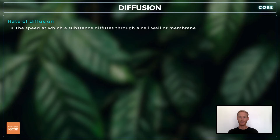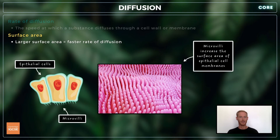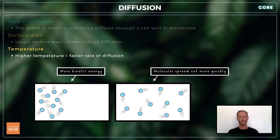You need to understand the factors that influence rate of diffusion, which is the speed at which a substance diffuses through a cell wall or membrane. Number one: a larger surface area will result in faster rates of diffusion. For example, intestinal epithelial cells are covered with hundreds of tiny projections called microvilli, which maximize the surface area of the membrane and increase rates of absorption. Number two: a rise in temperature gives molecules and ions more kinetic energy, which increases rates of diffusion as it allows them to move faster and spread out more quickly.